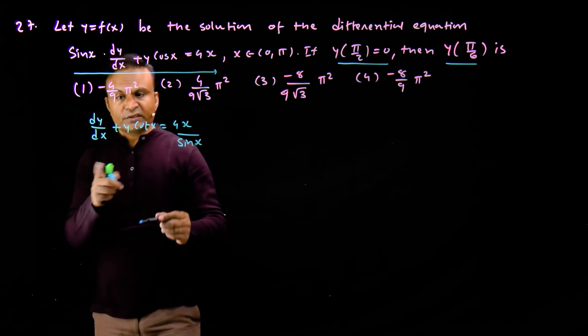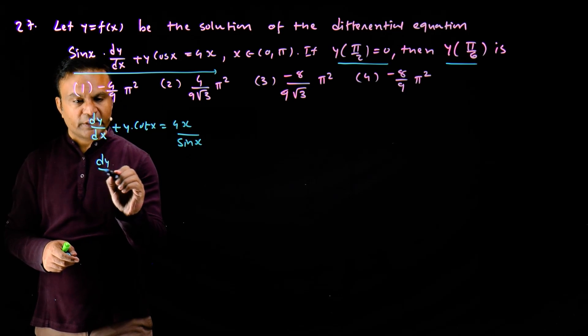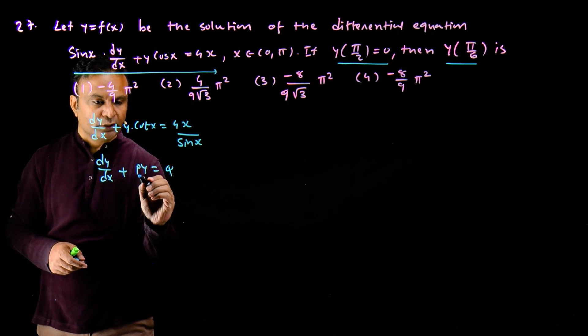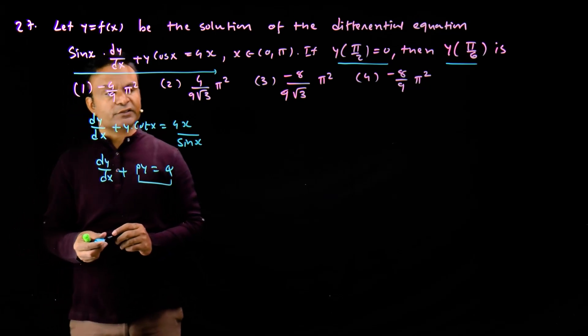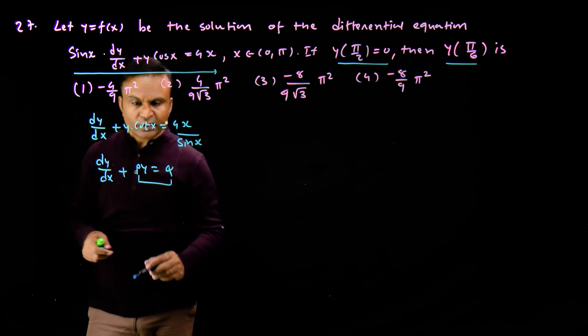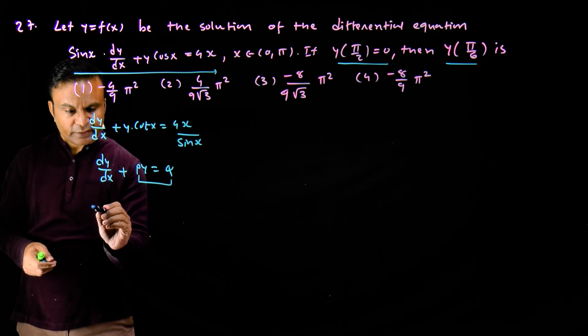Now this equation is of the form dy by dx plus py is equal to q, where p and q are functions of x. What do we do in such equations? We first find the integrating factor.